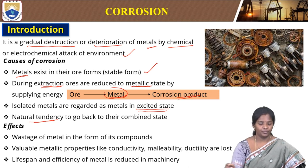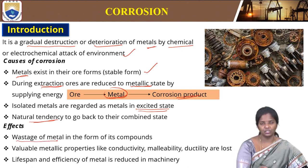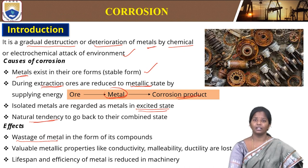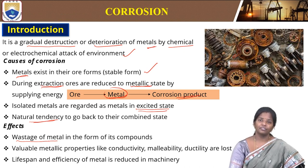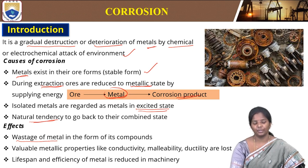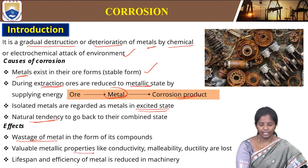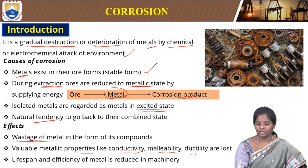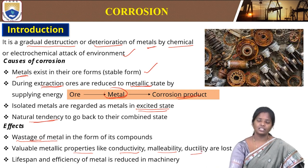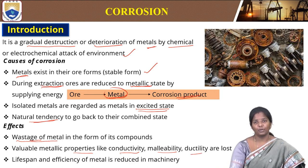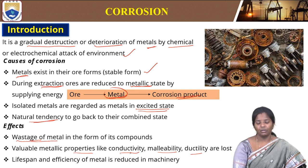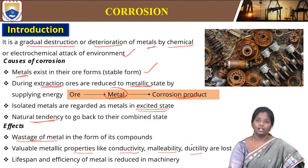What are the effects? Effects are the wastage of metals. If we are using a metal for some applications, then when it is corroded, it will lose its property for that particular application and therefore there is a wastage of this metal. Then valuable metallic properties like conductivity, malleability, and ductility are lost. Metal properties like conductivity, malleability, and ductility are lost if they are corroded.